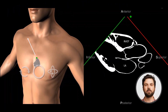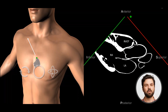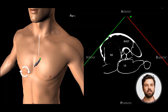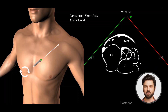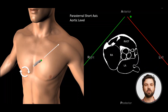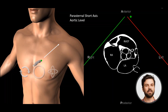The next view is the parasternal short axis view. From the long axis view, we rotate the transducer clockwise by 90 degrees. The transducer orientation marker should now face the patient's left shoulder.